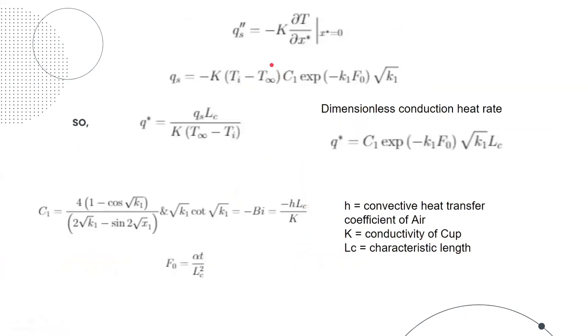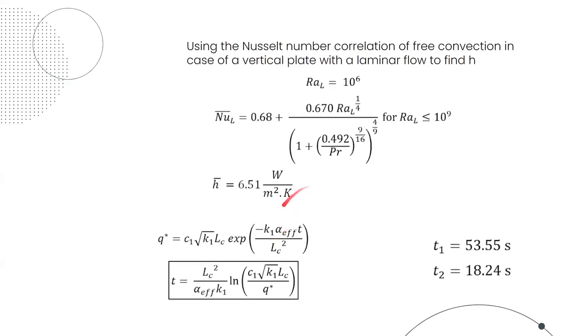We then proceed to calculate the heat flux, which will be given by the gradient of temperature, and then we non-dimensionalize it. Finally, in order to calculate the expressions for C1 and K1, we first proceed to calculate the Biot number. In order to do that, we use the Nusselt number correlation of free convection in case of a vertical plate with a laminar flow to find the convective heat transfer coefficient. For Rayleigh number around 10 to the power 6, Nusselt number correlation is like this. From here, we can calculate the value of H to be 6.51. From this value of H, we can calculate the Biot number, which we can use to calculate the value of C1 and K1. Substituting them in the expression for Q star and rearranging this expression will finally give us the expression of T.